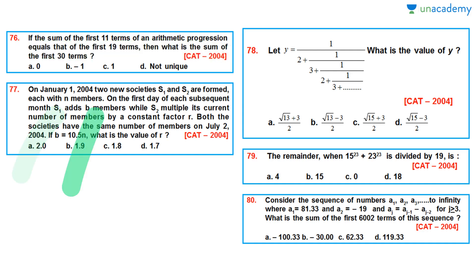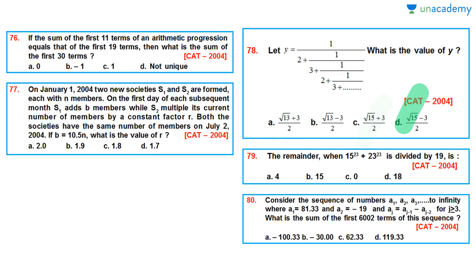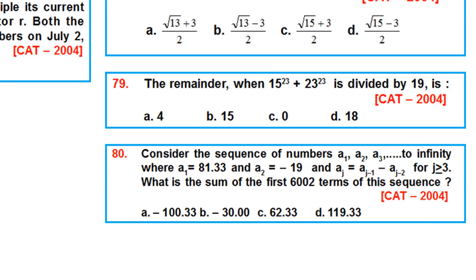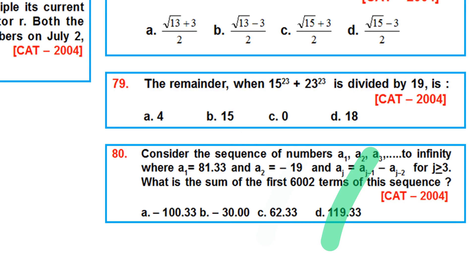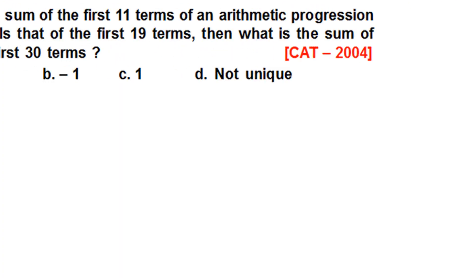Options for Q77 are: 2, 1.9, 1.8, 1.7. Question 78: Let y = 1/(2 + 1/(3 + 1/(2 + 1/(3 + …)))) and so on — what is the value of y? (CAT 2004) Question 79: What is the remainder when 15^23 + 23^23 is divided by 19? (CAT 2004) Options: a) 4, b) 15, c) 0, d) 18. Question 80: Consider the sequence a1, a2, a3, … to infinity, where a1 = 81.33, a2 = -19, and aj = aj-1 - aj-2 for j ≥ 3. What is the sum of the first 6002 terms? Options: a) -100.33, b) -30.00, c) 62.33, d) 119.33.